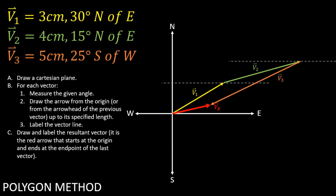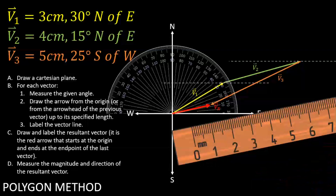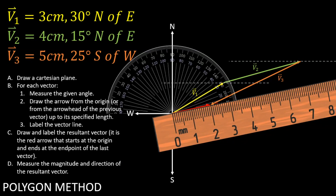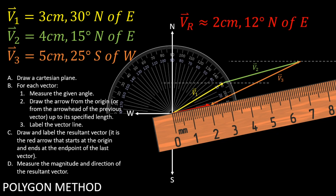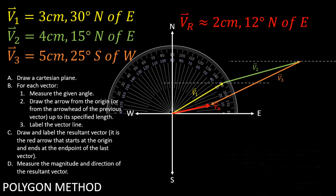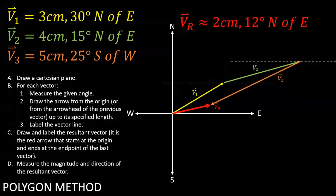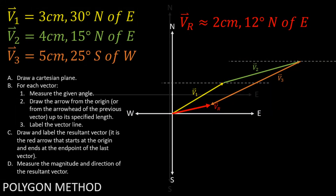Finally, measure the magnitude and direction of this resultant vector. The resultant vector has a magnitude of around 2 cm and a direction of 12 degrees north of east. This is the final displacement of the object for this example.